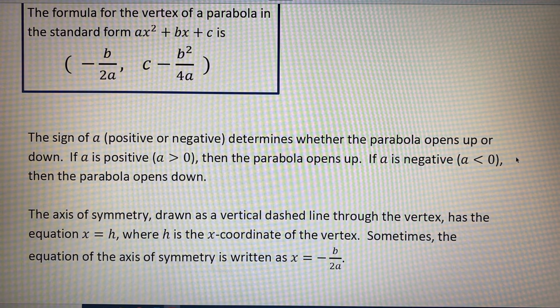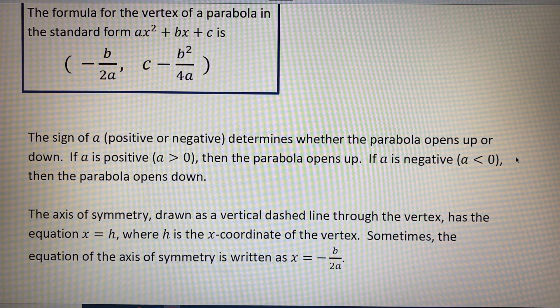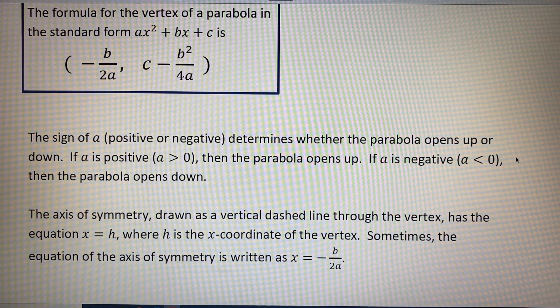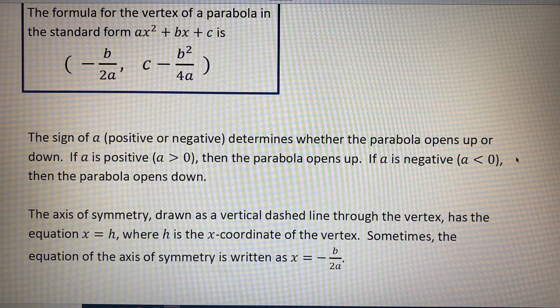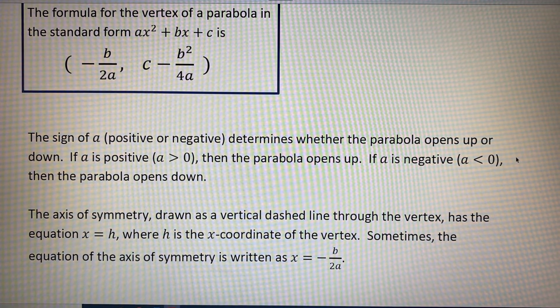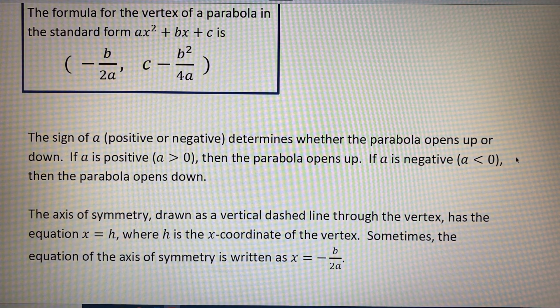The axis of symmetry drawn as a vertical dashed line through the vertex has the equation x equals h, where h is the x coordinate of the vertex.